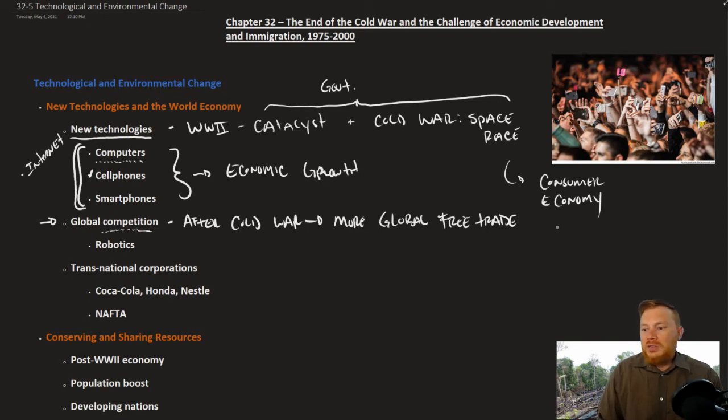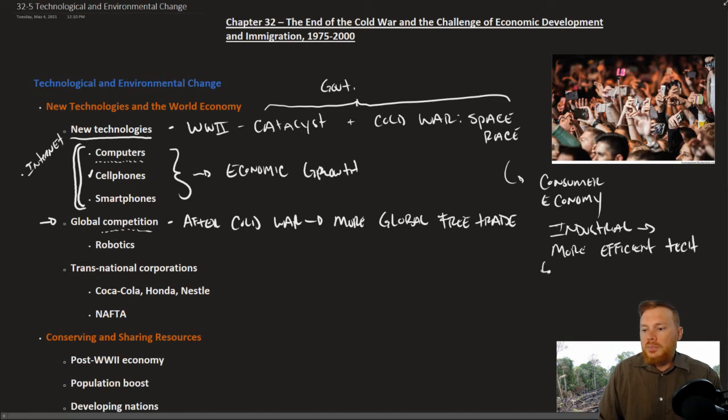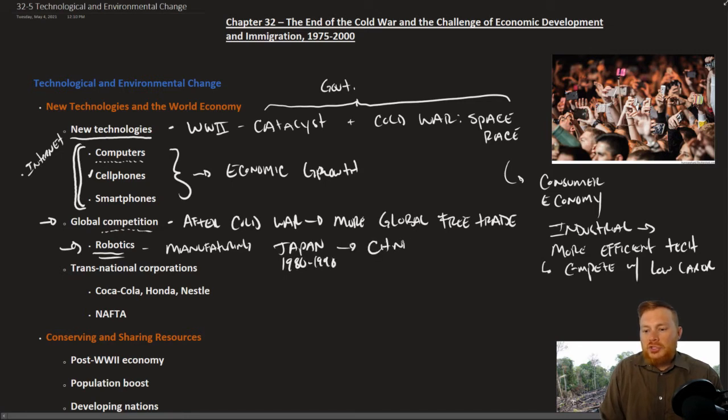And so that means especially that for the industrial nations or the developed nations, they need more efficient technology to compete with low labor costs. So for example, robotics, especially when it comes to manufacturing, really started in Japan and gave Japan the leg up in the 1980s and 1990s, but has since spread to places like China, which benefits both from robotics and from low labor costs.